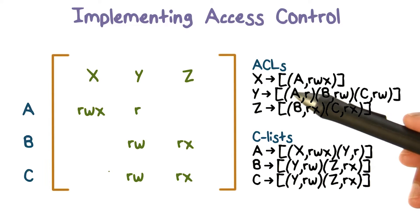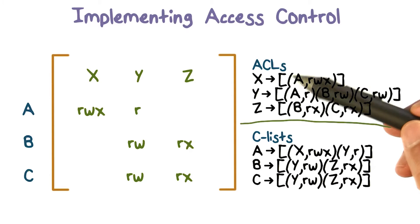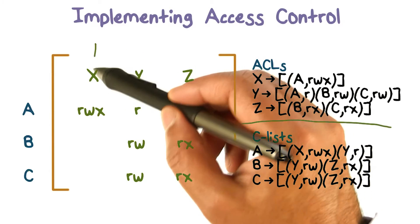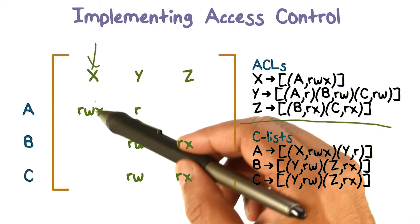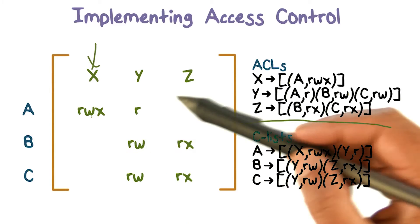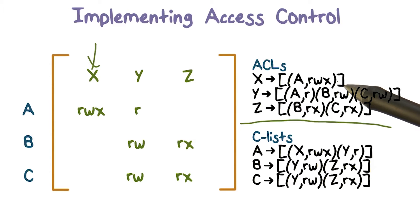If you want to implement the information in this access control matrix using ACLs, we look at what's at the top. ACLs correspond to objects. So the first object is x. Go down the column and you find user A who has read, write, execute permission. That's an entry in the list.